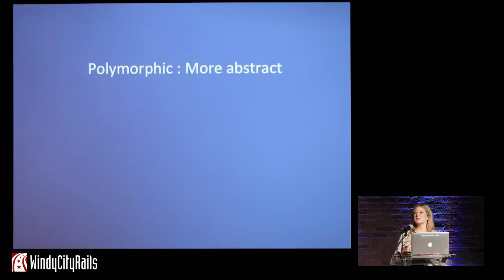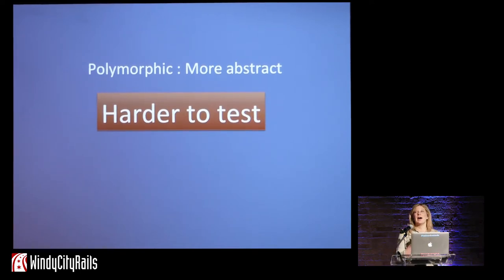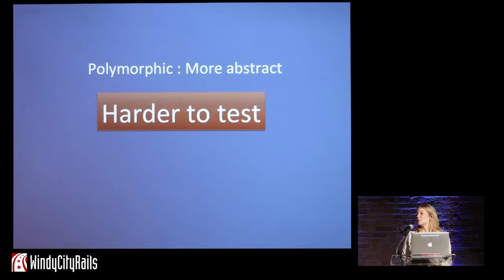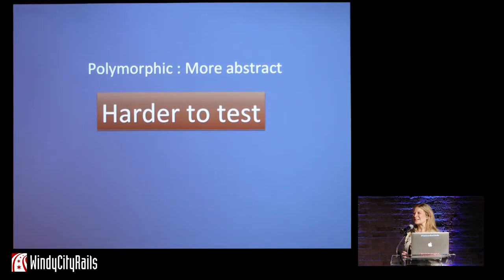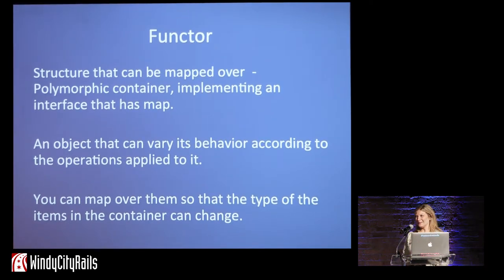I've used the word "polymorphic" a whole bunch of times — what does it mean? It basically means more abstract. I want you to take a step away from the concrete into the abstract. And what that means is it's harder to test. If we're doing TDD or writing tests at all, now not only do I have to test for my ints and my strings and my persons, I have to test for all of them — every type — which is very difficult. It's hard to write so many tests that you can have any kind of confidence things are going to go well.